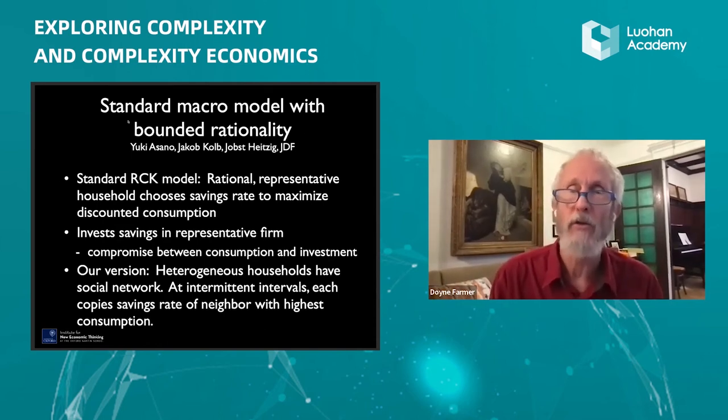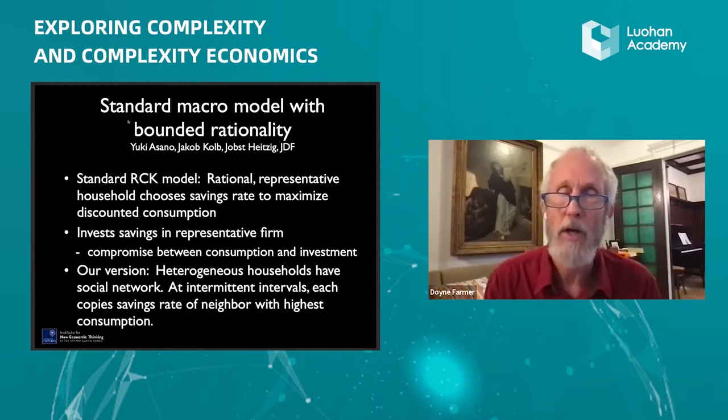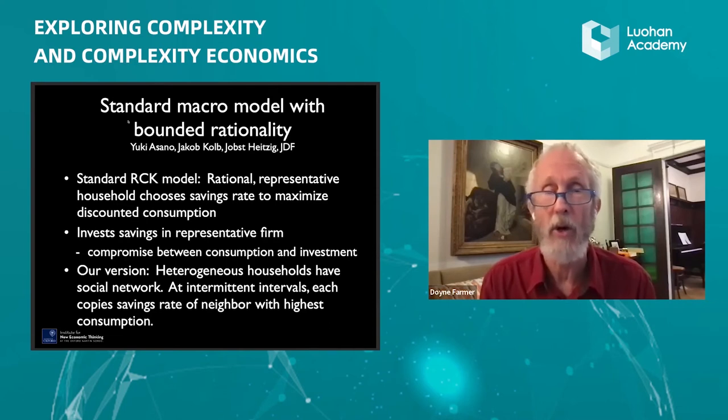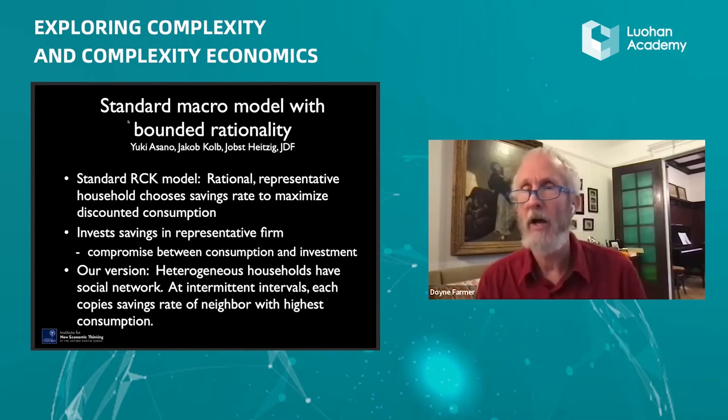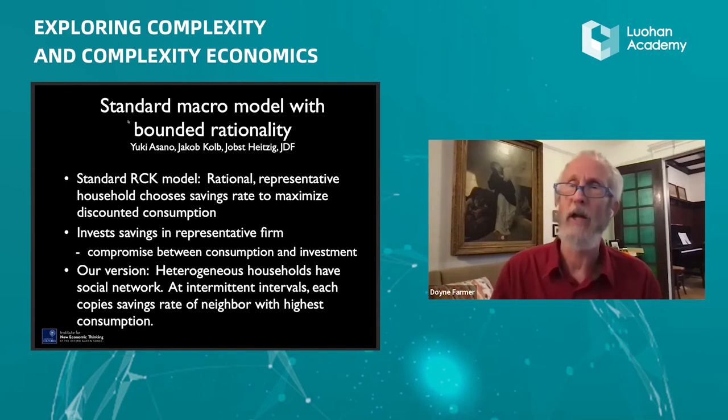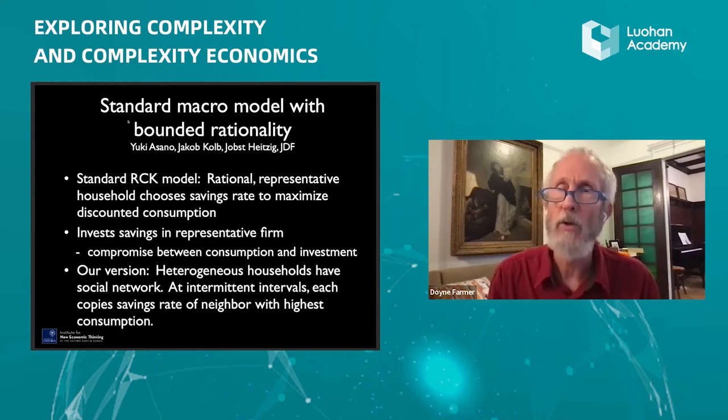And that household invests their savings in some representative firm that makes the right, and the household decides the right compromise between consumption and investment. And you can derive a golden rule. Well, in our version, we have heterogeneous households that have a social network, and at intermittent intervals, each copies the savings rate of its neighbor that happens to have the highest consumption at that point in time, and then holds on to that savings rate for a while until the household wakes up again and redoes the copying operation.